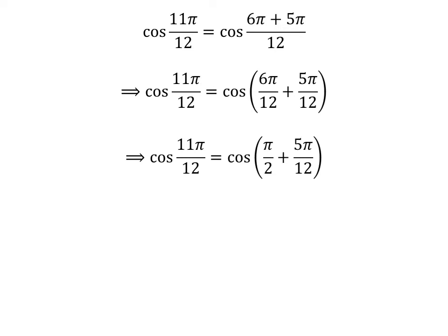Cancelling out the common factor in the numerator and the denominator in each fraction gives us cosine of 11 times pi upon 12 is equal to cosine of pi upon 2 plus 5 times pi upon 12.